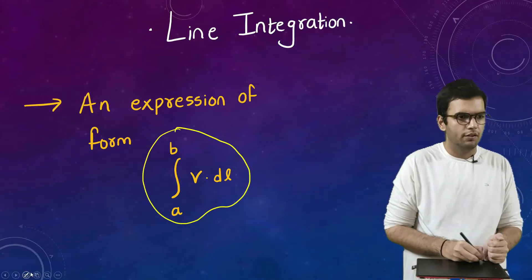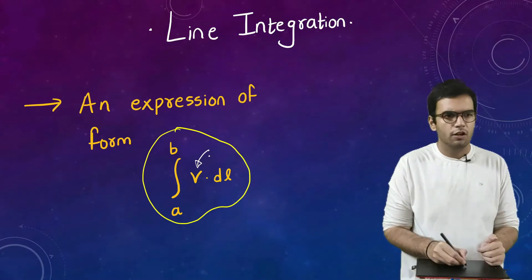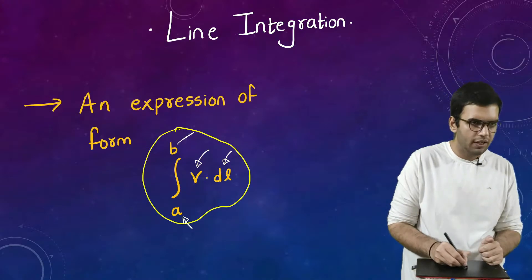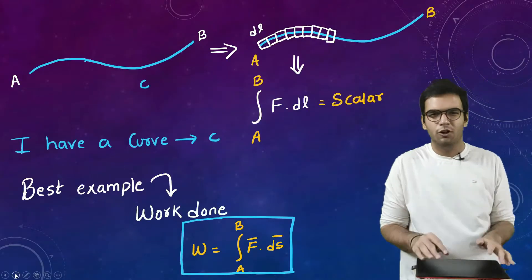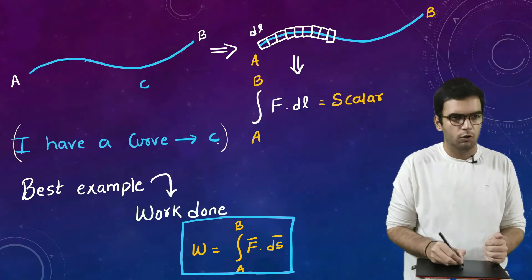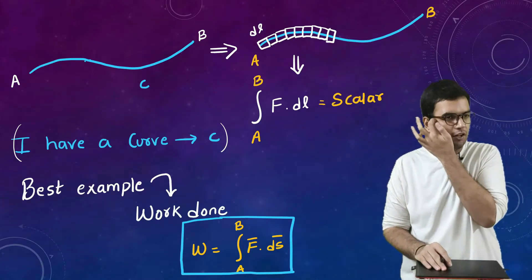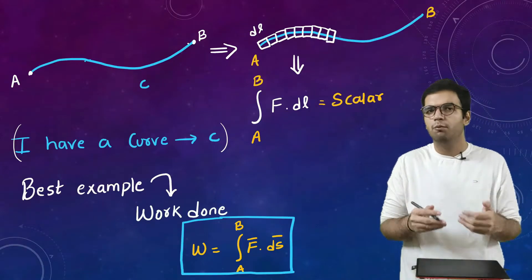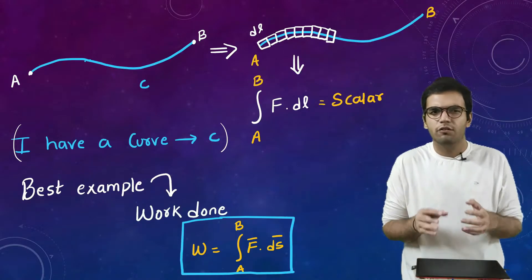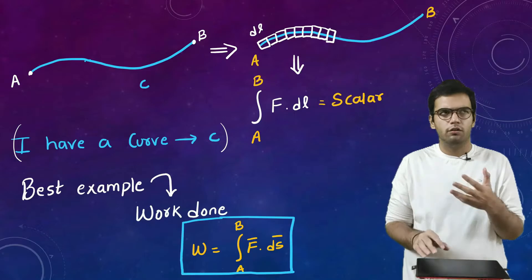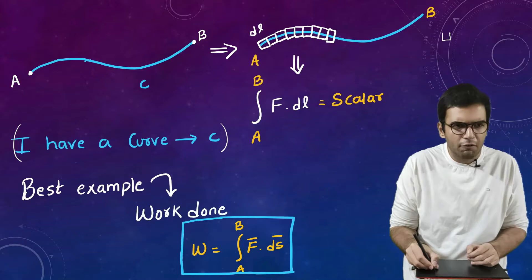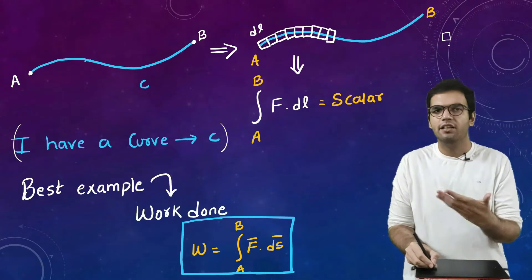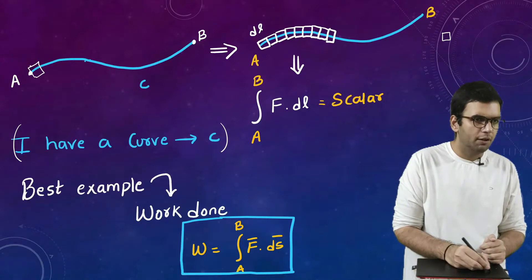Line integration is basically an expression of this form, where we have a function, a position vector element, and a simple integration with an initial limit and a final limit. Consider a curve C with an initial point A and a final point B. In physics we consider a small infinitesimal element on that curve — which we name dl — define something for it, and then integrate that element dl along the curve.